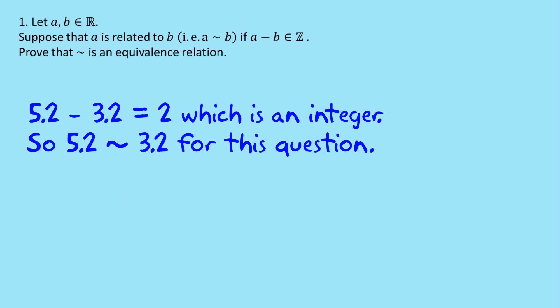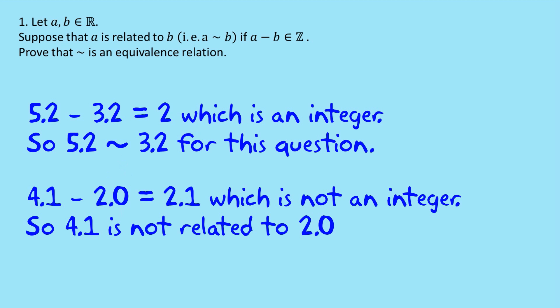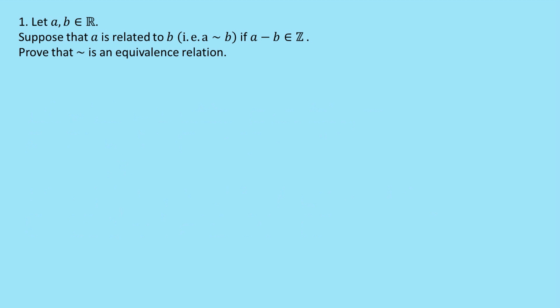On the other hand, 4.1 minus 2.0 is equal to 2.1, which is not an integer. So 4.1 is not related to 2.0. So that's how relations work.